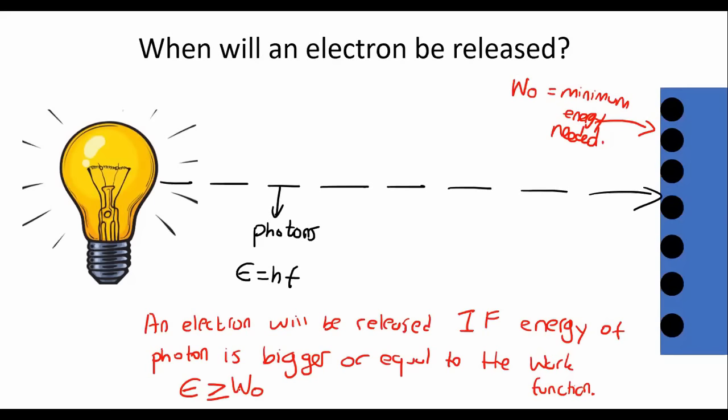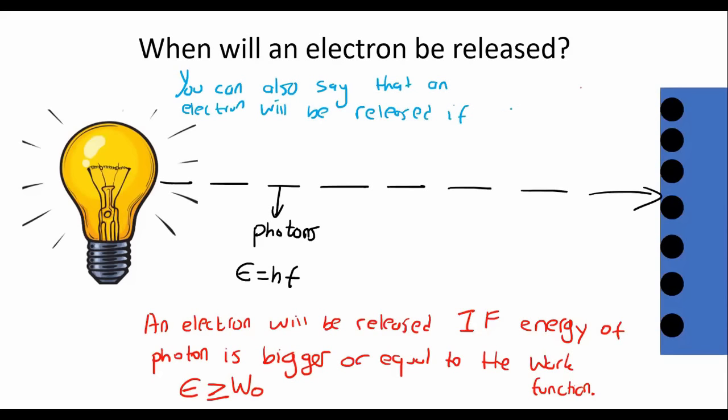You can also say that an electron will be released if the frequency... Now remember, I'm not talking about the threshold frequency. I'm talking about the photon frequency is greater or equal to threshold frequency. And so that's like F must be bigger than or equal to F0.